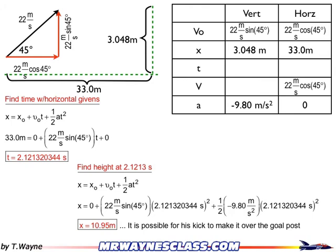And as it turns out, when it's 33 meters away, it's 10.95 meters high. It's going to easily make it across those crossbars. So the kick is going to make it over the goal post. That's what I'm going to tell the coach.